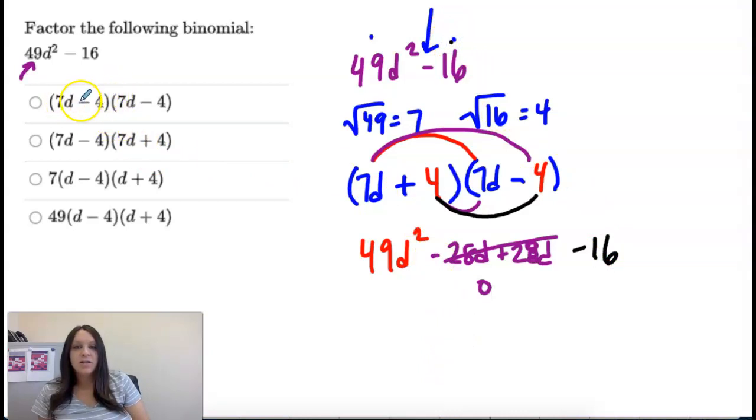So you need to know your perfect squares. Okay, at least 1 through 12. That's my answer.